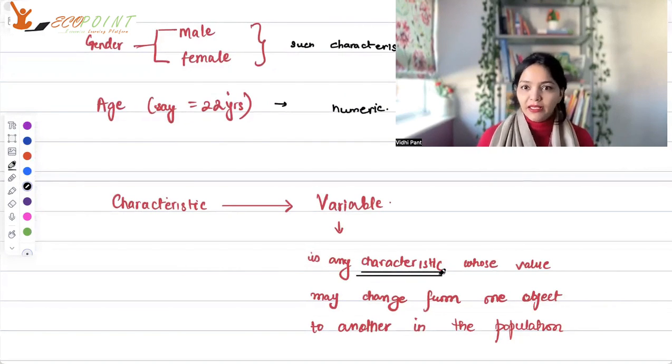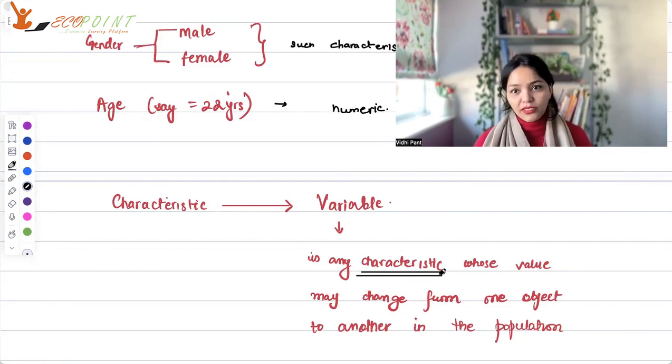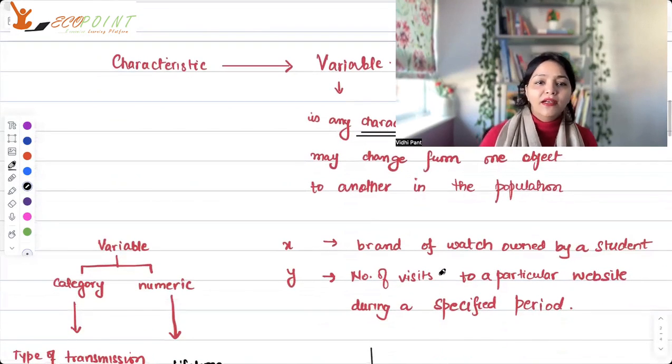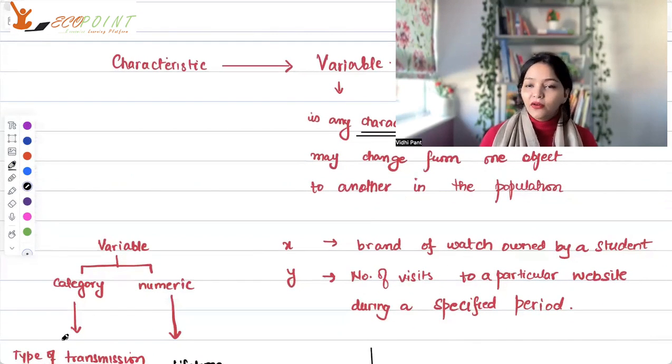Any characteristic whose value may change from one object to another in the population. So you take one student, male, one student, female, one student graduating at 21 years, one student graduating at 22 years. So the value can keep on changing. Therefore, these are called variables.